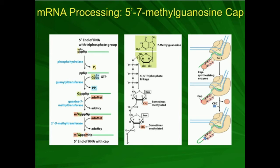Number one, it protects the 5' end from degradation. You have to have the mRNA stable enough to where it can actually exit the nucleus and have at least some time to be translated by ribosomes in the cytoplasm. Without this cap, it would degrade much more quickly — so it makes it more stable and resistant to hydrolysis. It also facilitates translocation out of the nucleus. There are pores in the nucleus that allow it to move through, and this cap is involved in the recognition processes that allow it to move out.